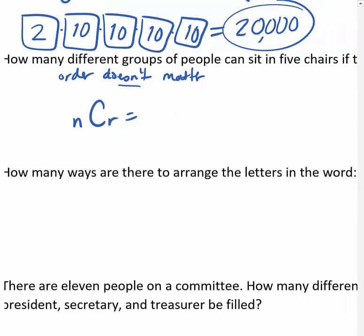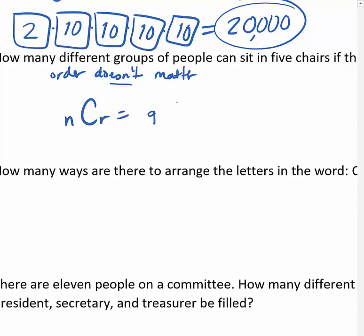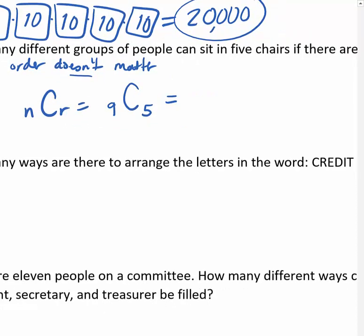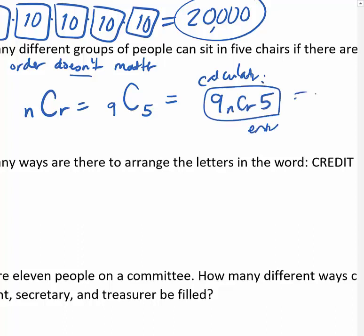Using my calculator: N is 9 (total people) and I'm choosing 5. I type 9, go to probability, grab NCR, press Enter, press 5, press Enter. The calculator shows 9 NCR 5 and gives me 126. So there are 126 possible outcomes.